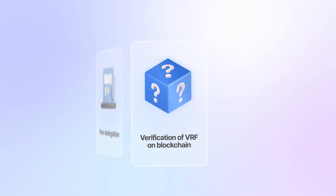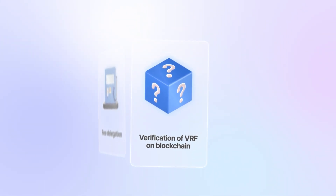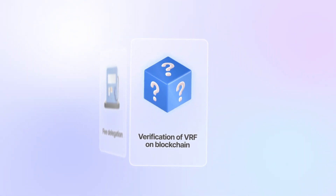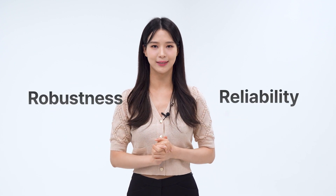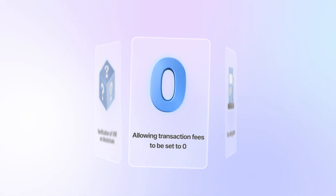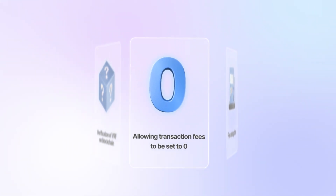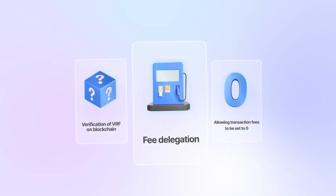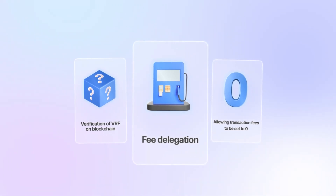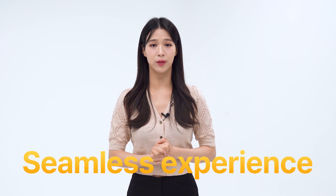Furthermore, the newly incorporated VRF will allow developers to conduct on-chain verification of random functions within Wemix 3.0. This will facilitate a wide range of tests to ensure robustness and reliability. Lastly, the logic for changing the base gas fee will be improved, allowing transaction fees to be set to zero. This will be beneficial for conducting tests on the Wemix 3.0 platform or building private chains. These features aim to create a seamless experience within the Wemix ecosystem, promoting wider participation and accessibility for everyone.